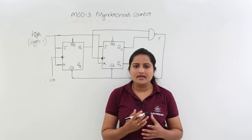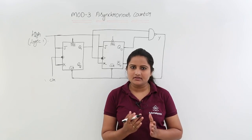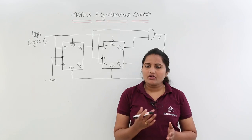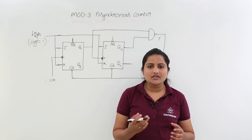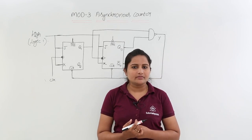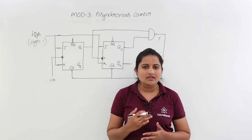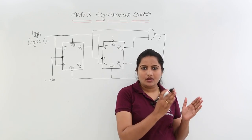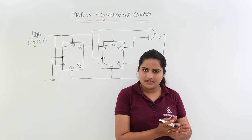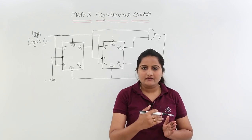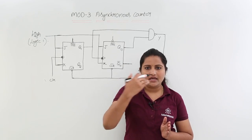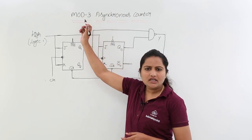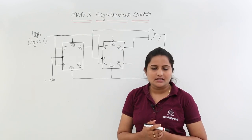In this class we are going to design a mod-3 counter. This mod-3 counter is an asynchronous counter. We already discussed the modulus of a counter — the number of states passed by the counter before reaching its initial state. For example, a counter initially at 00 must cycle through states and return to 00; the number of states to do so is its modulus. Mod-3 means 3 states are required to reach the initial state.